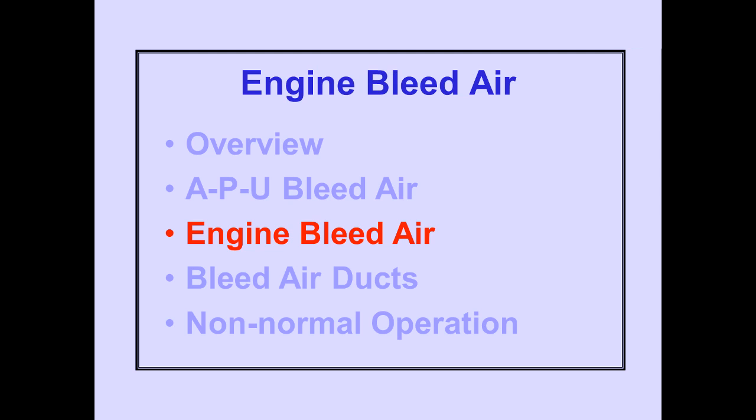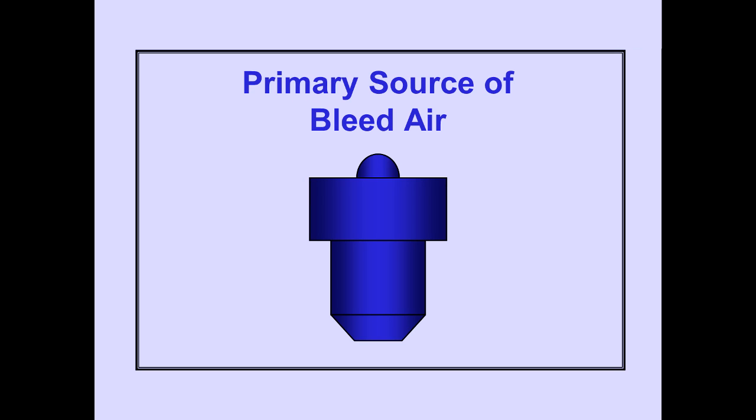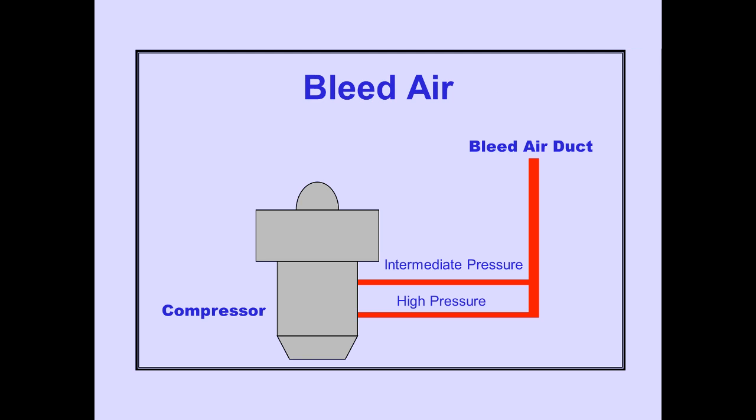Let's discuss engine bleed air. Normally, engines are the primary source of bleed air. There are two sources of engine bleed air: intermediate pressure (IP) bleed and high pressure (HP) bleed. Both sources are from the engine compressor section.